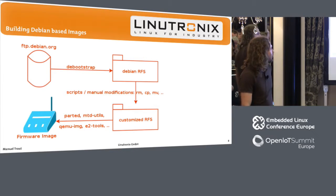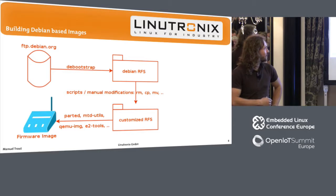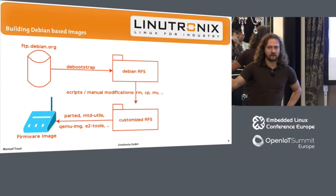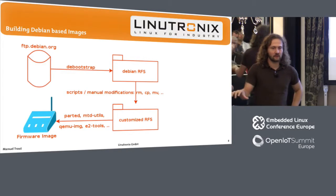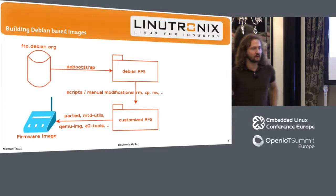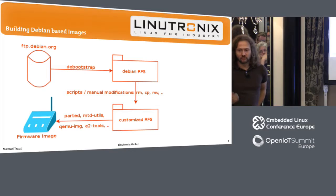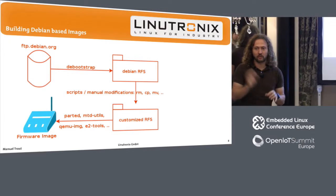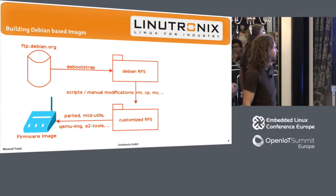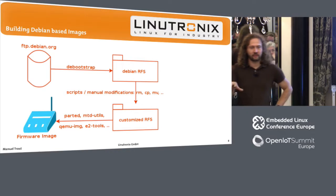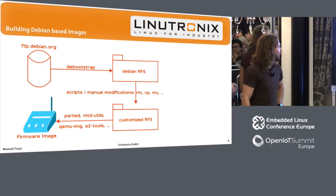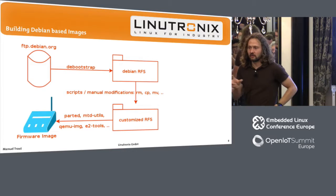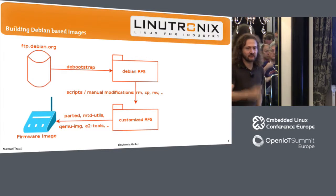You extract it and put it there. Debootstrap has a second stage that needs to run on the target — you can use emulation for that or copy the stuff onto an SD card and run it on the target. Then you do some manual modification: remove documentation, man pages, install some additional packages, and get your customized root filesystem for your product. After that, you can use open source tools to produce a firmware image that is later flashable on NAND flash, SD card, or whatever.